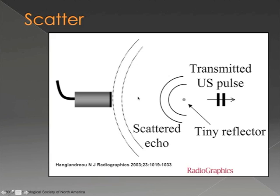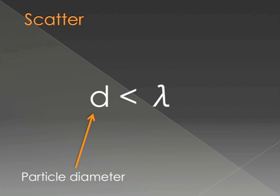Finally, probably the most important interaction with tissue is called scatter. Your sound beam is emitted from your transducer, hits a tiny reflector, and causes sound waves to be scattered off in numerous different directions — represented here by the two curved lines. The dotted lines show that over time, those scattered echoes are reflected back towards the transducer. Whether or not something is scattered depends on the particle diameter, which has to be less than the wavelength. Scattered echoes and interference patterns from scattered echoes are predominantly what leads us to see the echo texture for things like the liver, muscle, or kidney and how those are different. So scatter really is probably the most important tissue interaction for image formation.